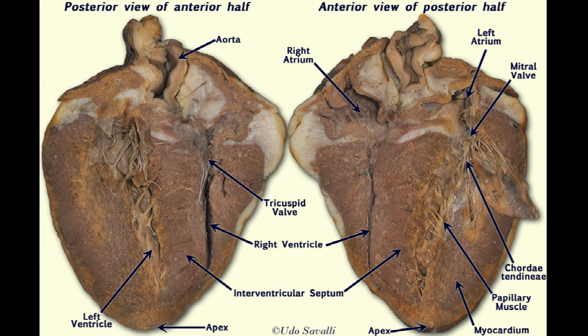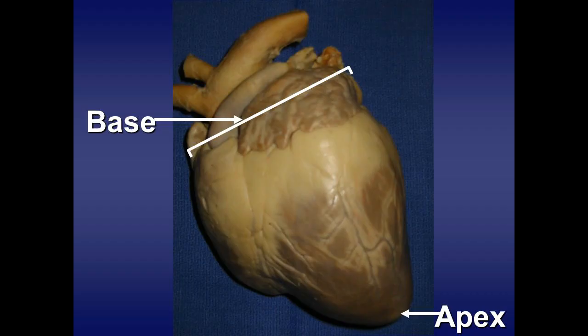Let's talk about the parts of the heart. There are two surfaces, two borders, a base, and an apex. The base of the heart is the broader top portion which receives the hilum of the heart and is oriented dorsocranially.